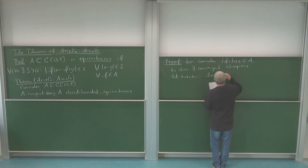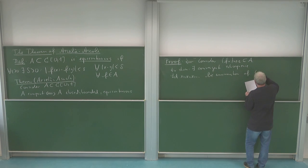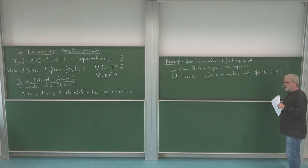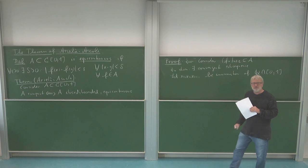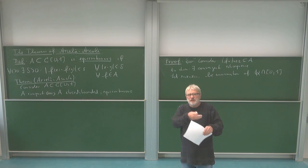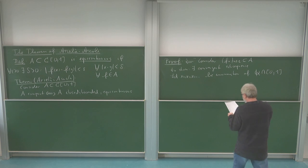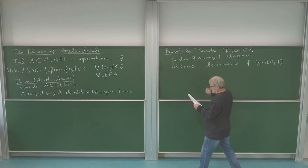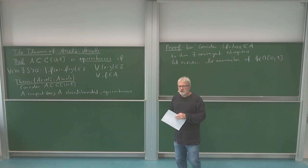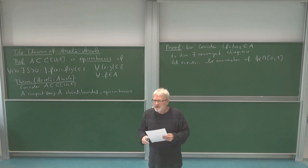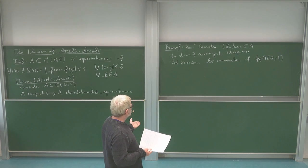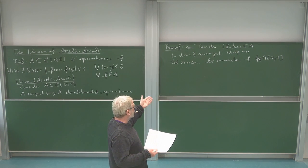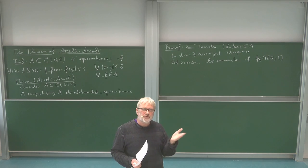We take the rational points and enumerate them, calling them x₁, x₂, x₃, and so on. This is an enumeration of the rationals Q ∩ [0,1]. We know the rationals in [0,1] are countable, so we can write down an enumeration of them. This is just a sequence which exhausts the rational numbers.